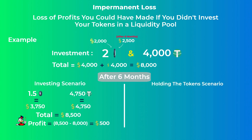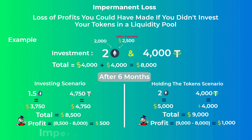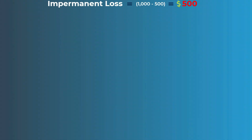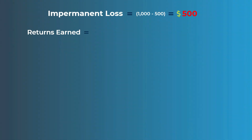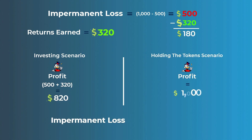But let's see what could have happened if you held your tokens and didn't invest them. The 2 Ethereum coins will be worth $5,000 at the new price, and adding the 4,000 Tether tokens we get a total of $9,000, which means that you could have made $1,000 in profit. So you missed an additional $500 — this $500 is the impermanent loss. During these 6 months you may have earned returns; let's say $320. Subtracting them from the impermanent loss, you actually lost $180 by investing your tokens in this pool.